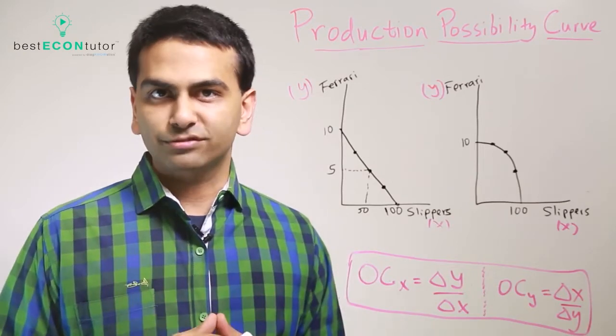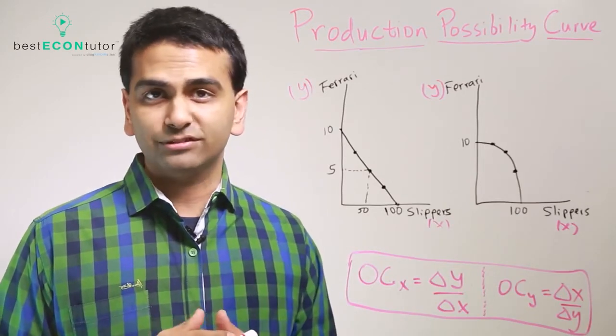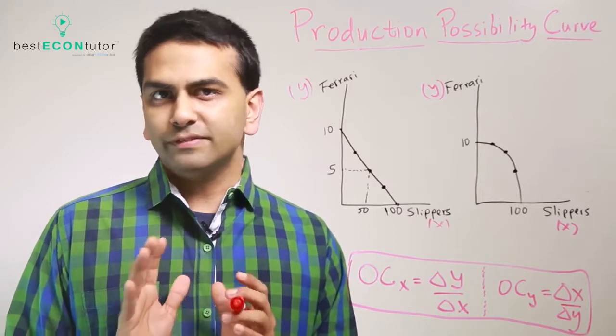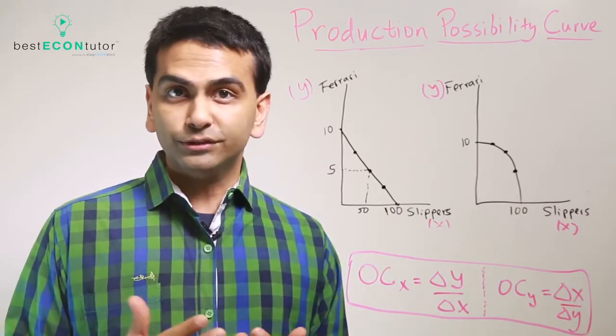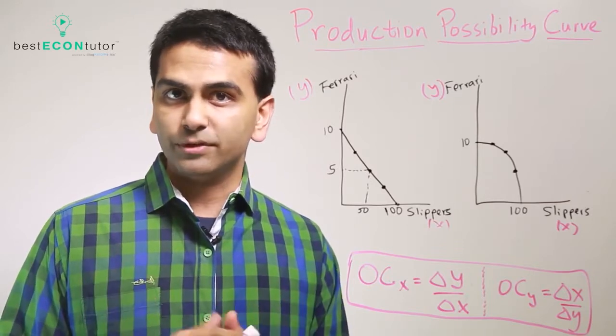Production possibilities frontiers, or production possibilities curves. Suppose you live in a world where there's no such thing as currency, and there's only two goods, Ferraris and slippers.